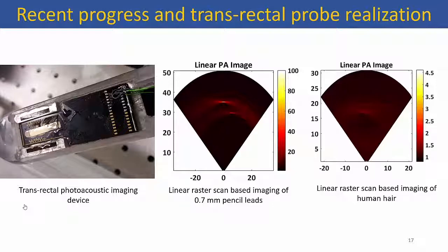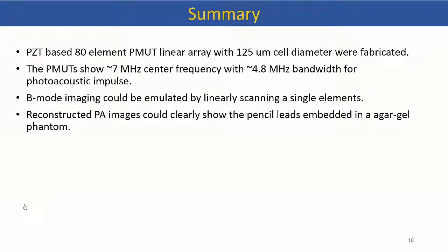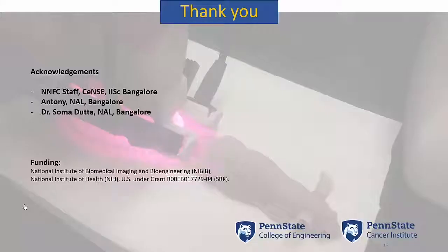With the linear scanning, we can already see it seems to be working — we can pick the image of a single hair and images from pencil leads. In conclusion, we fabricated PMUTs with around 125 micron cell diameter showing around 7 megahertz center frequency with 4.8 megahertz bandwidth. We used these for photoacoustic imaging by linear scanning and could detect pencil leads — the first step towards building photoacoustic imaging systems. Thank you. I thank NFSC staff at IISc Bangalore where I fabricated these PMUTs, my collaborators, and the funding agency.